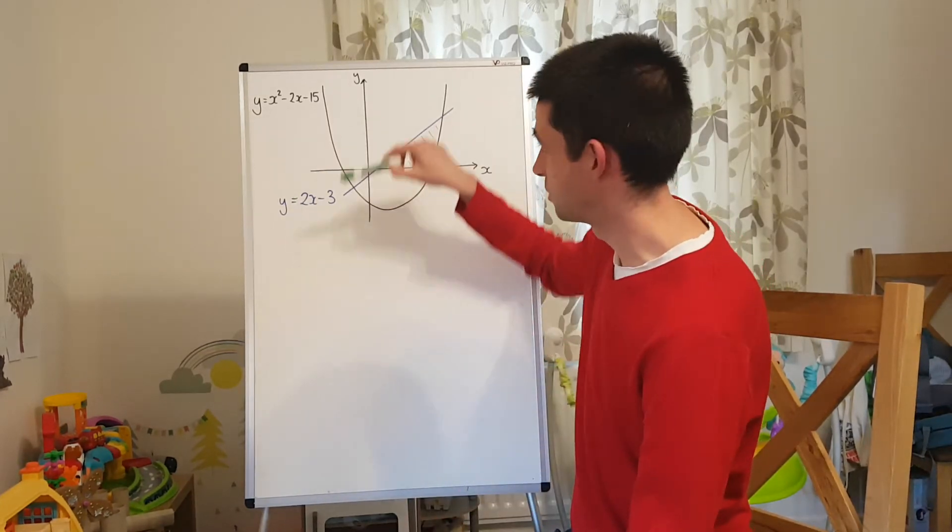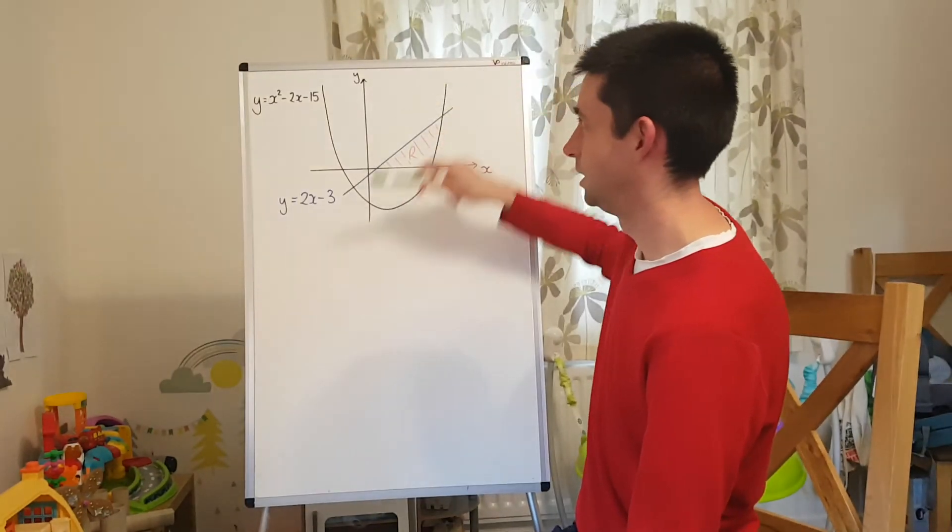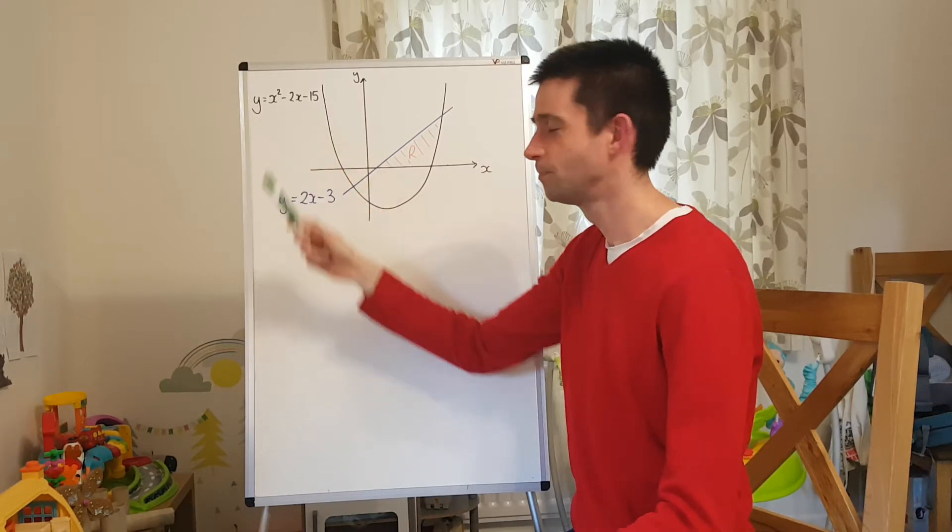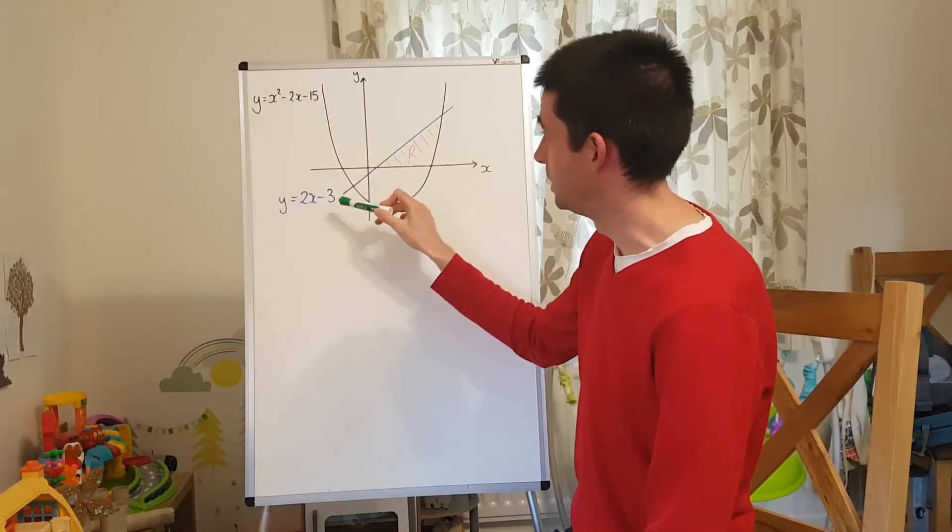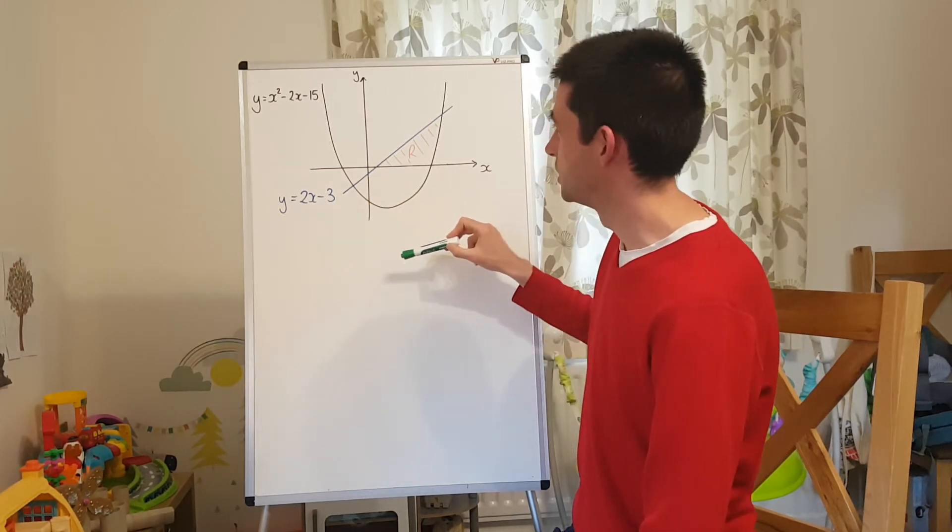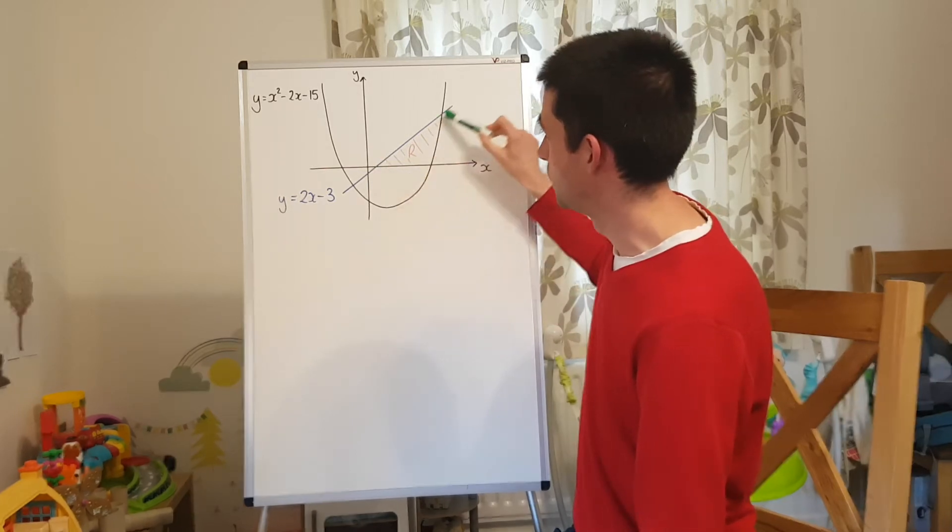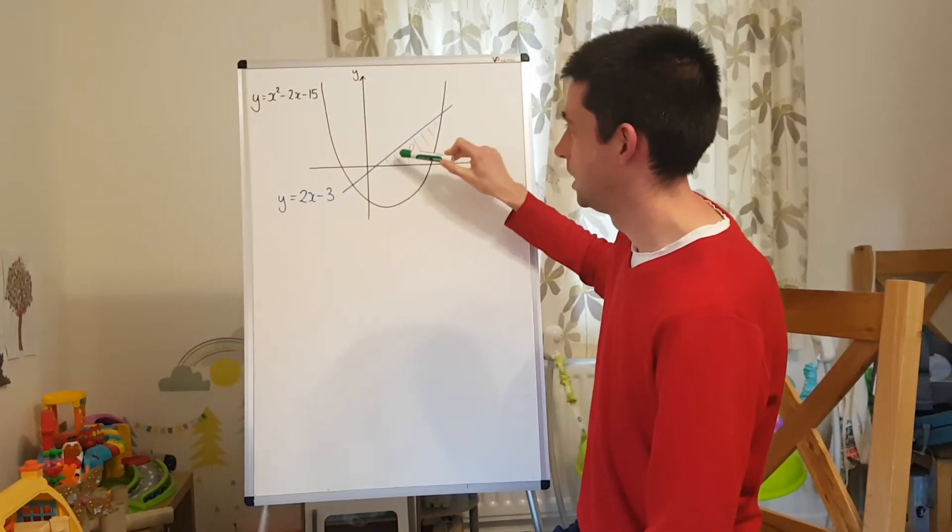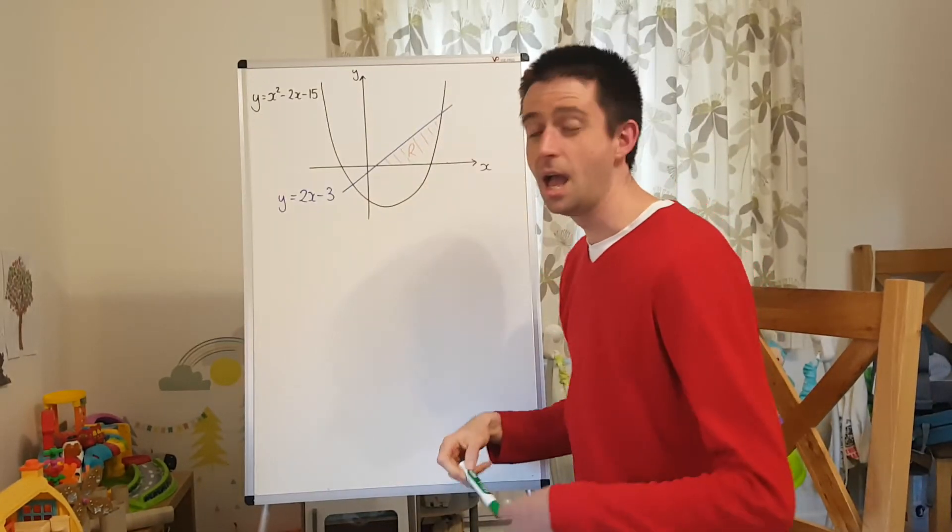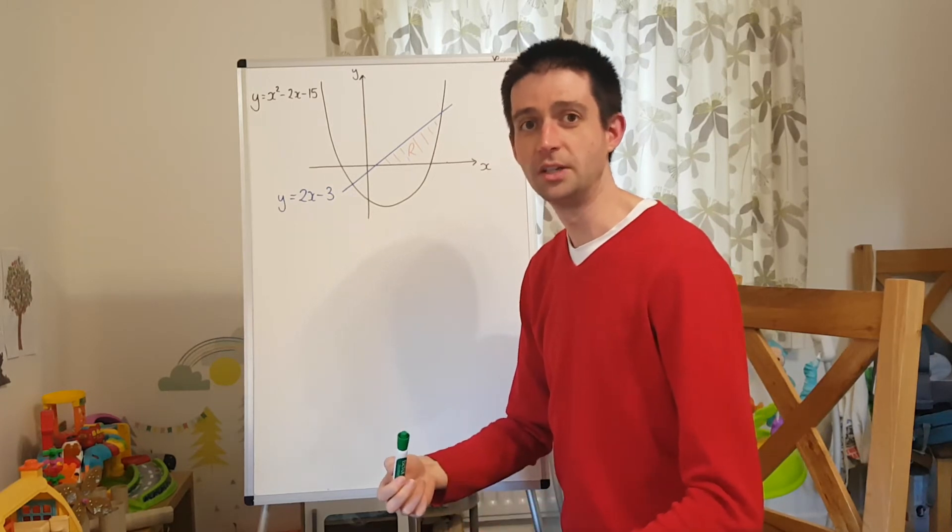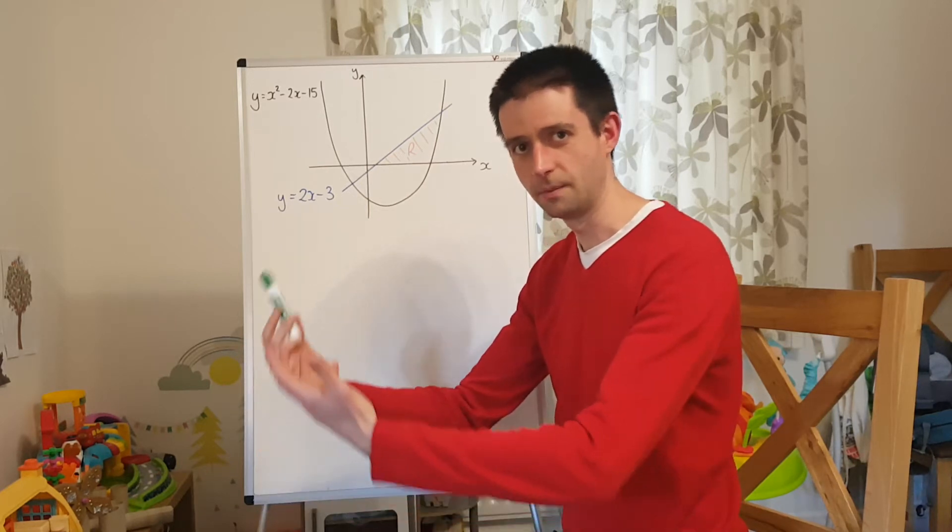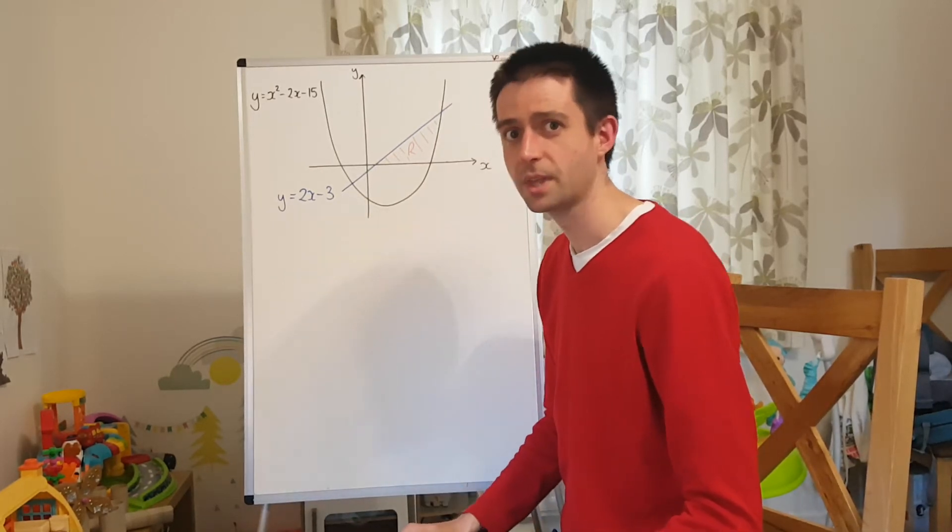We have a quadratic curve, which I've drawn in black here, which has equation y equals x squared minus 2x minus 15. And we have a straight line that I've drawn in blue that has equation y equals 2x minus 3. And we're being asked to find the region contained between the line, the curve and the x-axis, which I've shaded in here in red and called the region R.